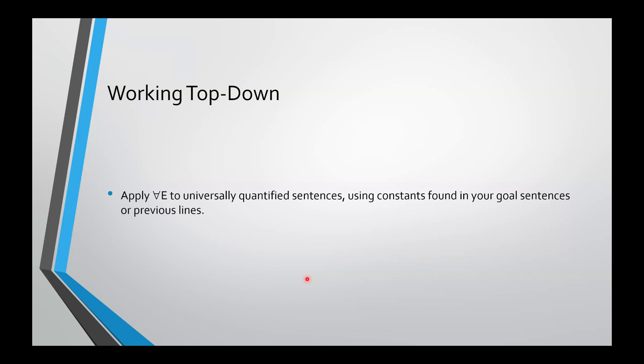Wait until you've got a goal sentence that's got a constant in it and then instantiate them. When you've got an existentially quantified sentence at the top of your derivation, then apply existential elimination to it, using constants that aren't found in any open assumptions. This is a very, very important thing when you're working top-down.